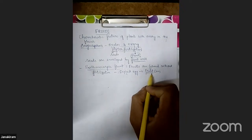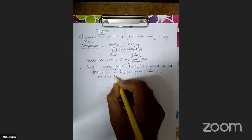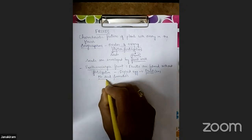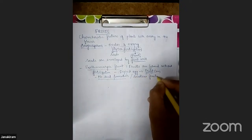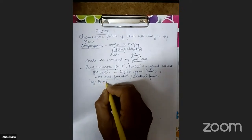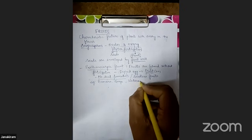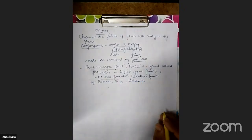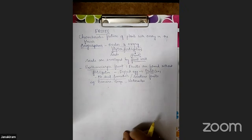Parthenocarpic fruits are diploid in condition since the egg is diploid and directly divides to form the fruit. Because no fertilization occurs, there is no seed formation — parthenocarpic fruits do not have seeds; they are seedless fruits. This is commonly seen in banana, some grape varieties, and some watermelon varieties. Such fruits result from bypassing the fertilization process.